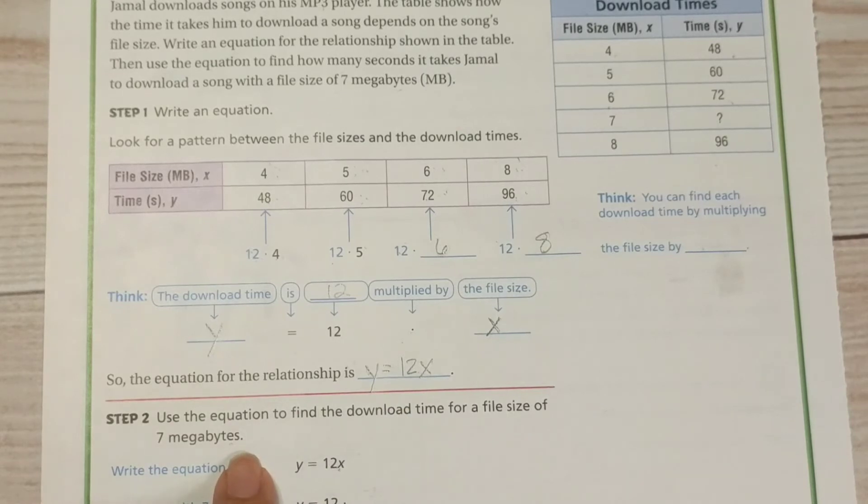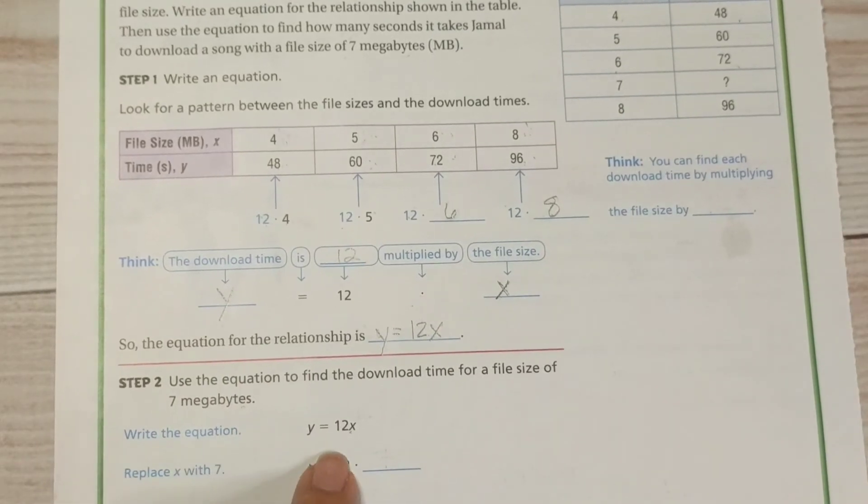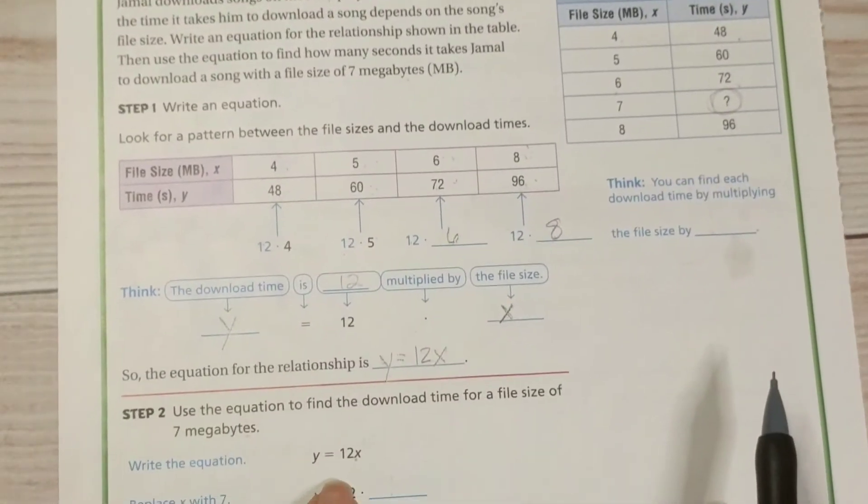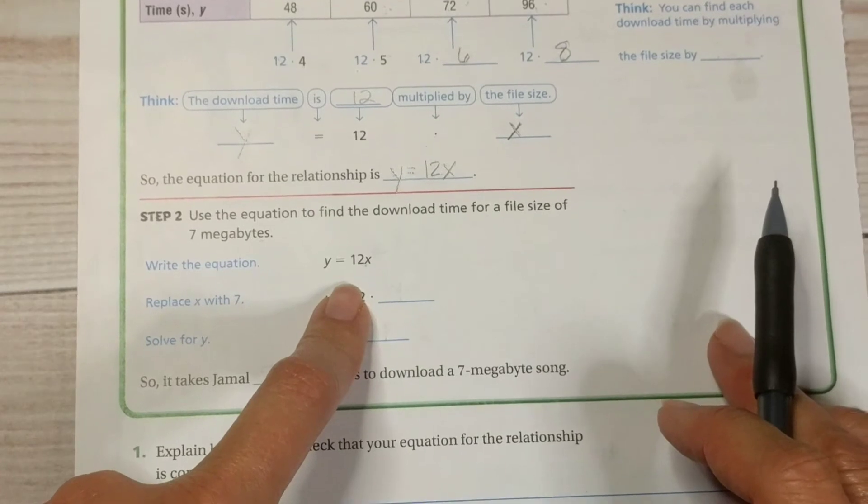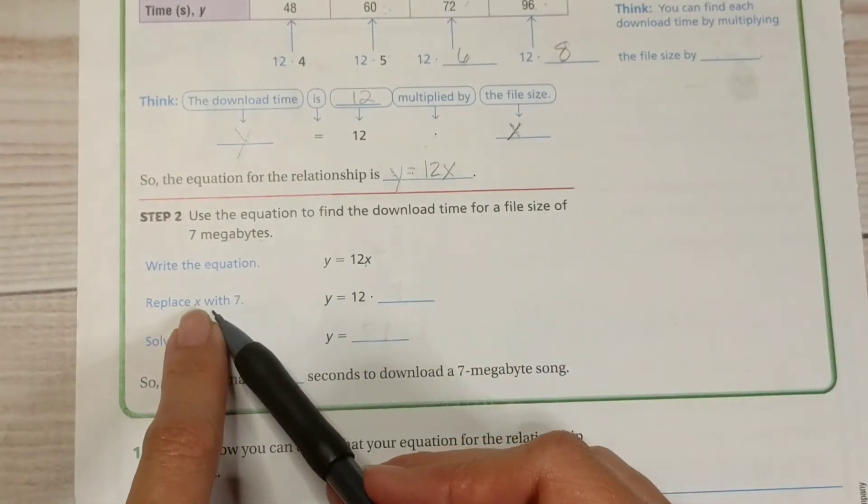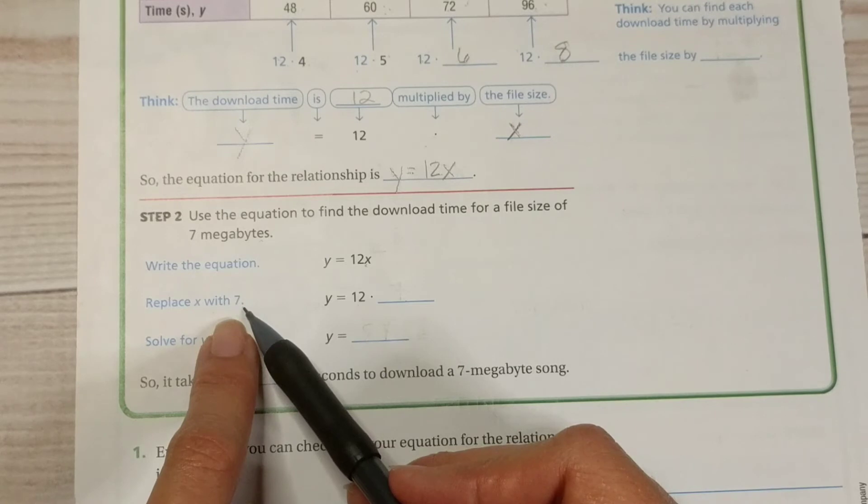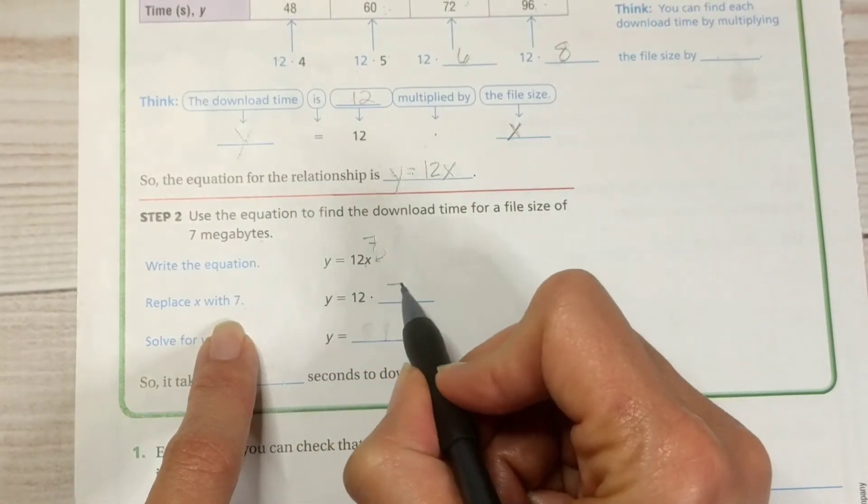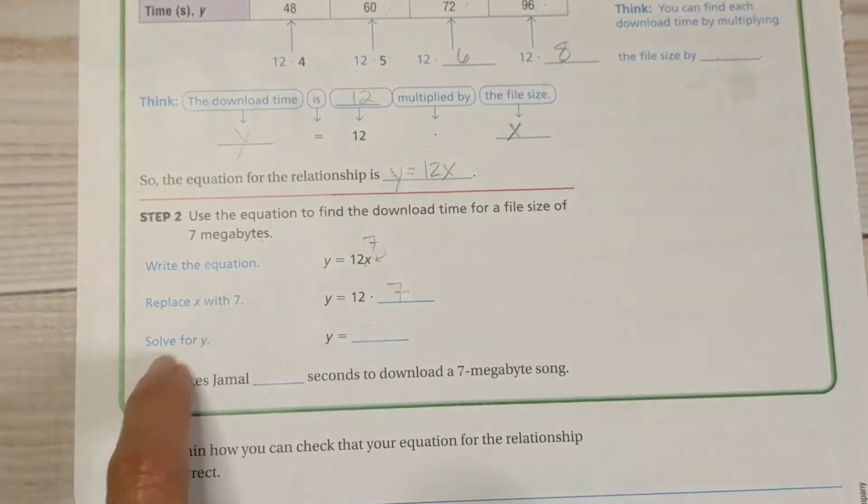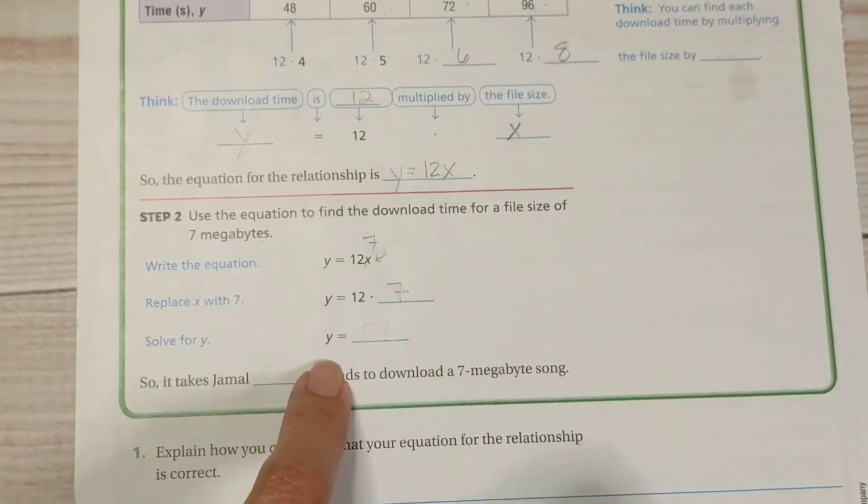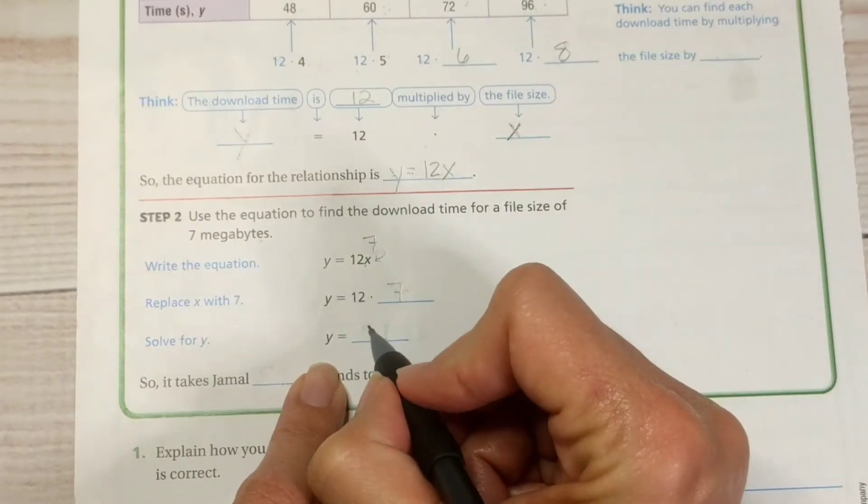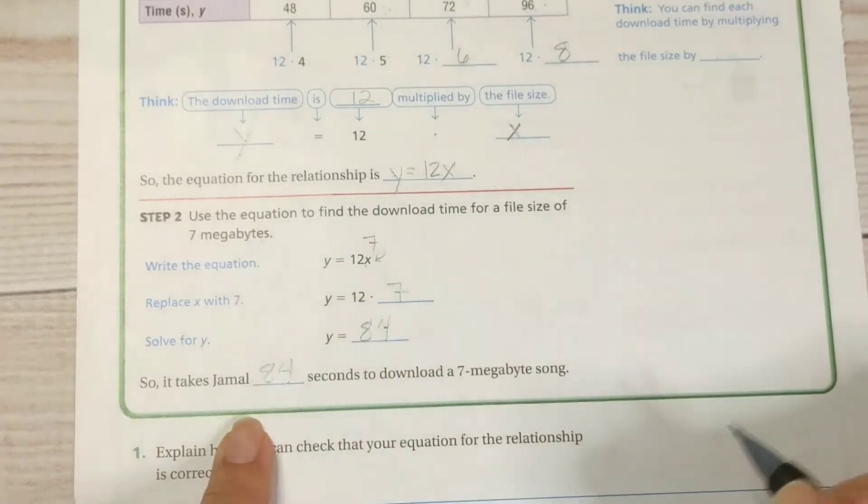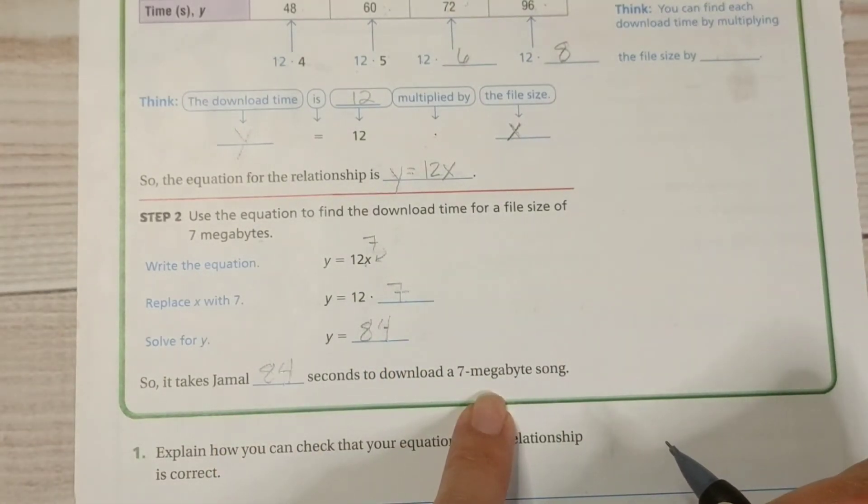Use the equation to find the download time for a file size of 7 megabytes. See, we don't know that yet. In our table, that's still a question mark up here. All right. Replace X with 7. So, we're going to put a 7 in for this X right here. 12 times 7. Now, we're going to solve for Y. Y equals 12 times 7, which is 84. So, it takes Jamal 84 seconds to download a 7 megabyte song.